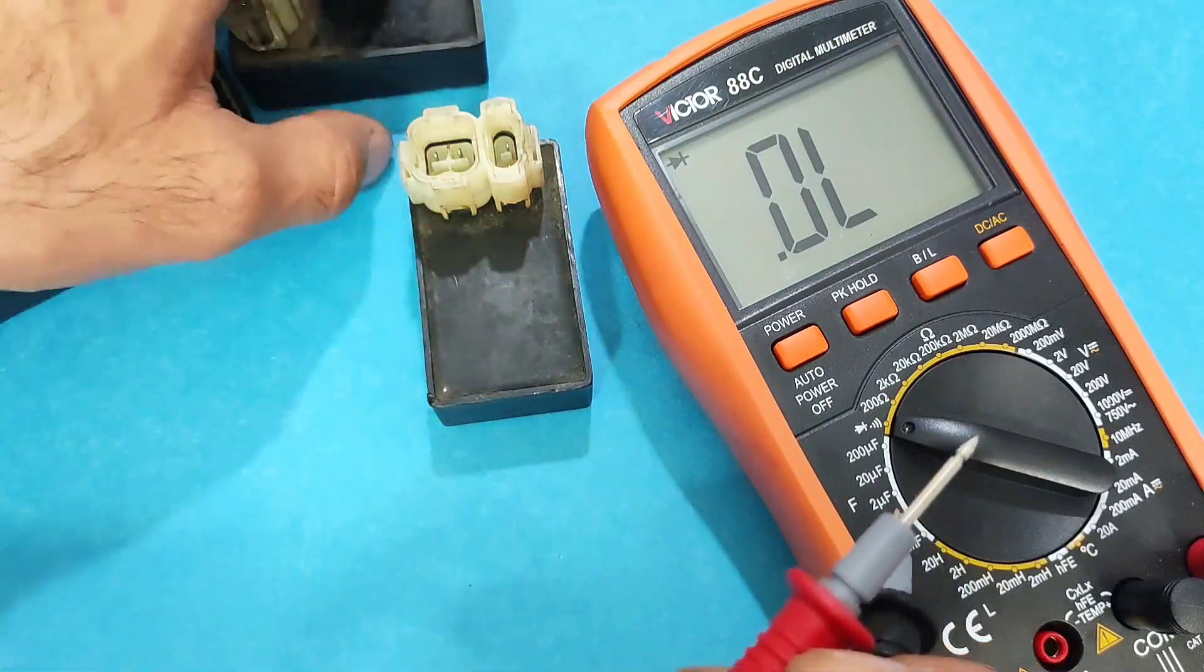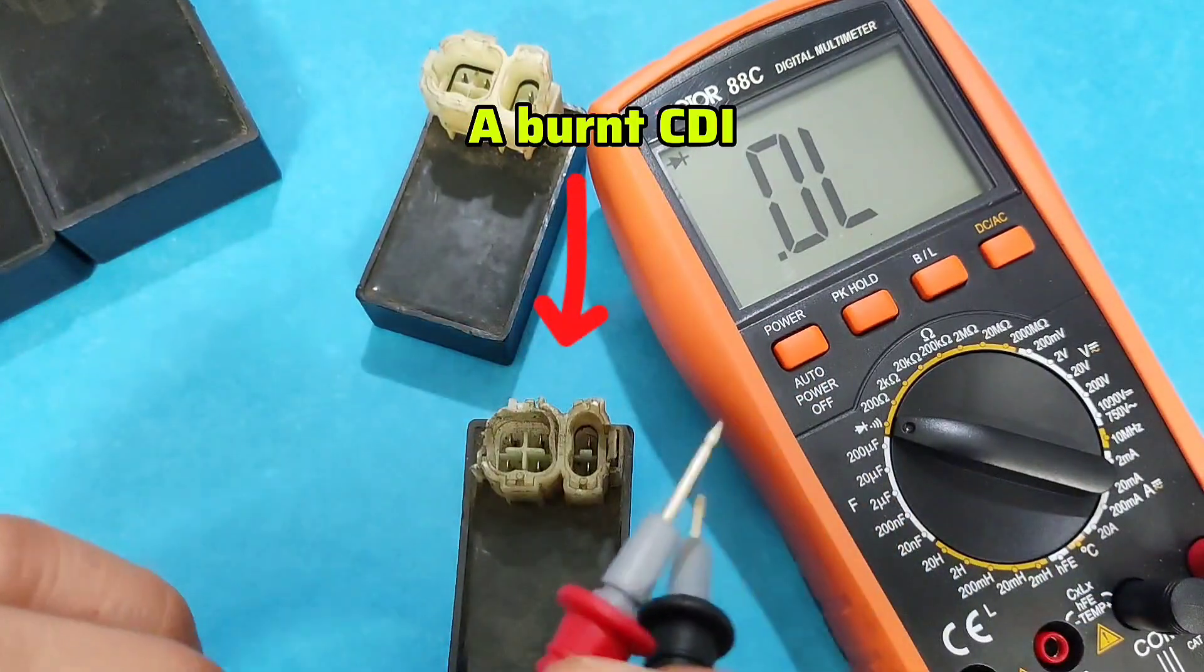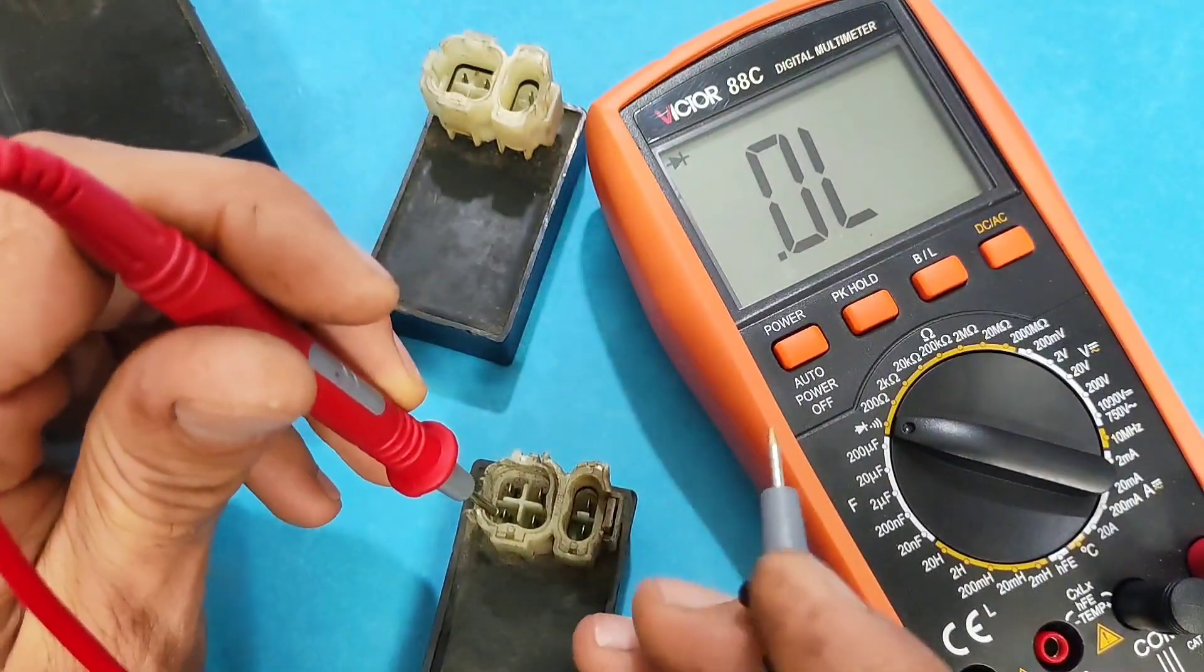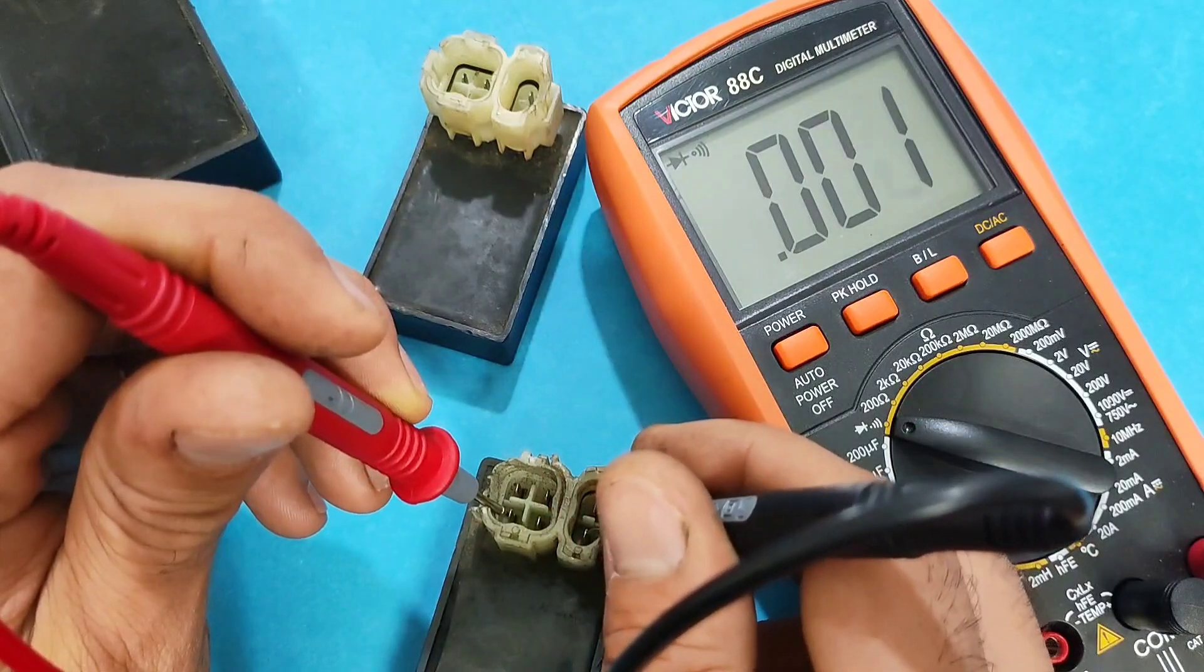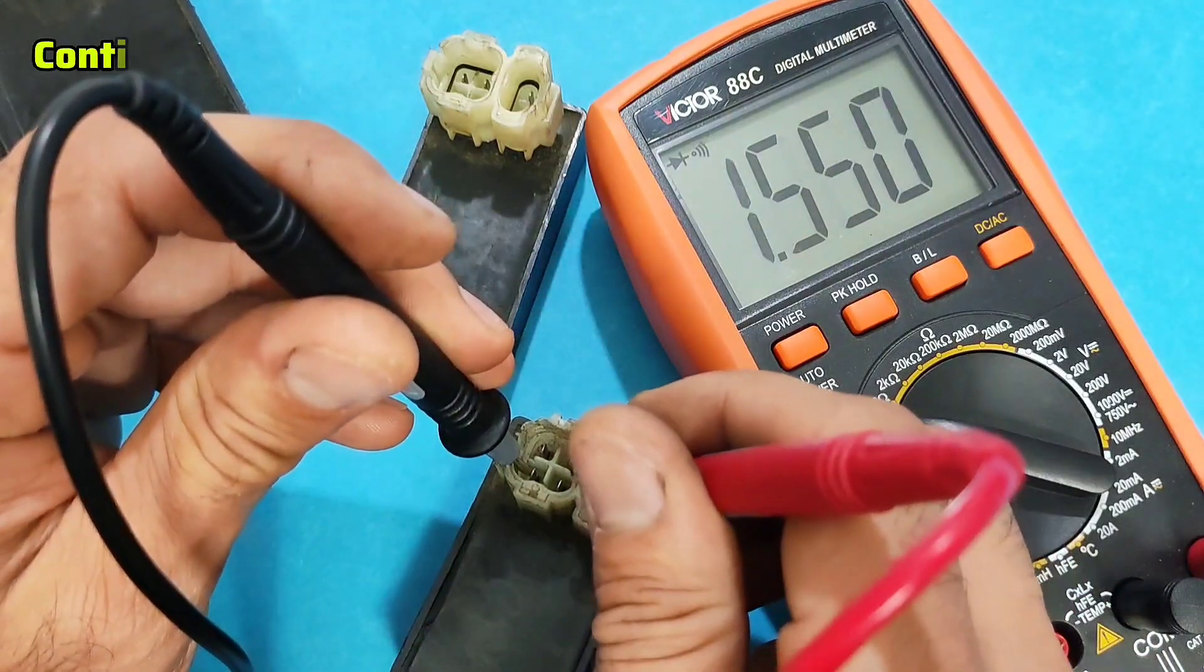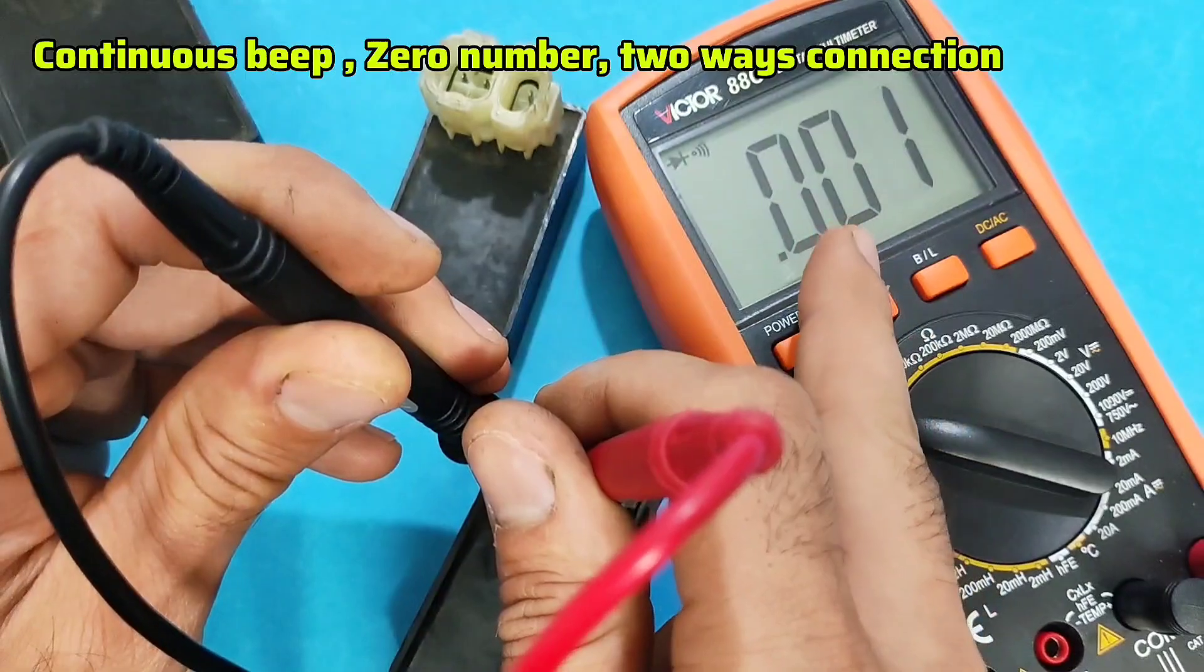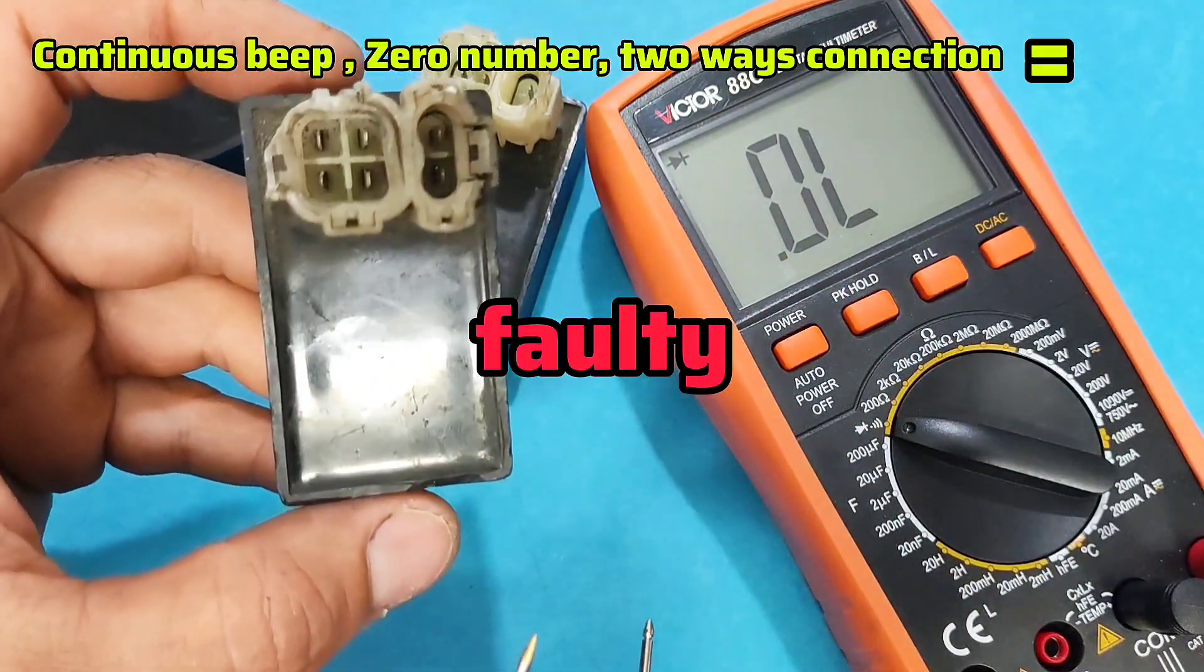This CDI is good. This is a burnt-out CDI. Look. Negative. Continuous beep. Switch the probes. Continuous beep. Zero. This CDI is burnt out.